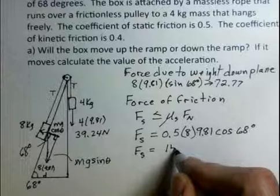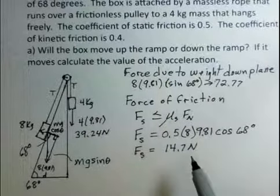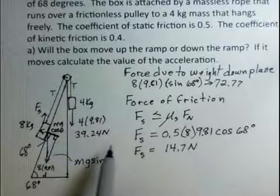So the box is tending to move down the ramp. That's the bigger force. Friction is going to act up the ramp. There's going to be a force of friction here. Friction opposes the tendency to move. So I know now which way to draw the friction arrow. It's resisting the movement of the box down the ramp. It's going to be up. But if I add up these two forces here, I do not get as high as 72.77. So the box will move down the ramp.